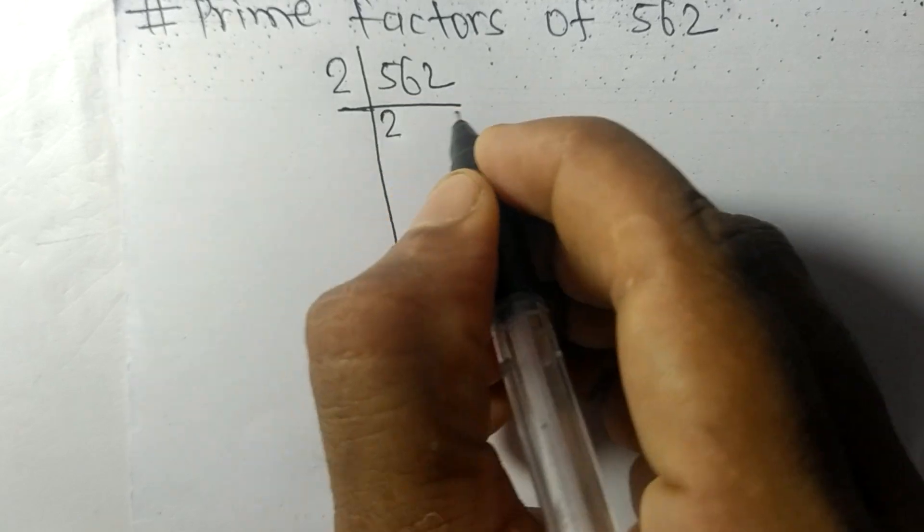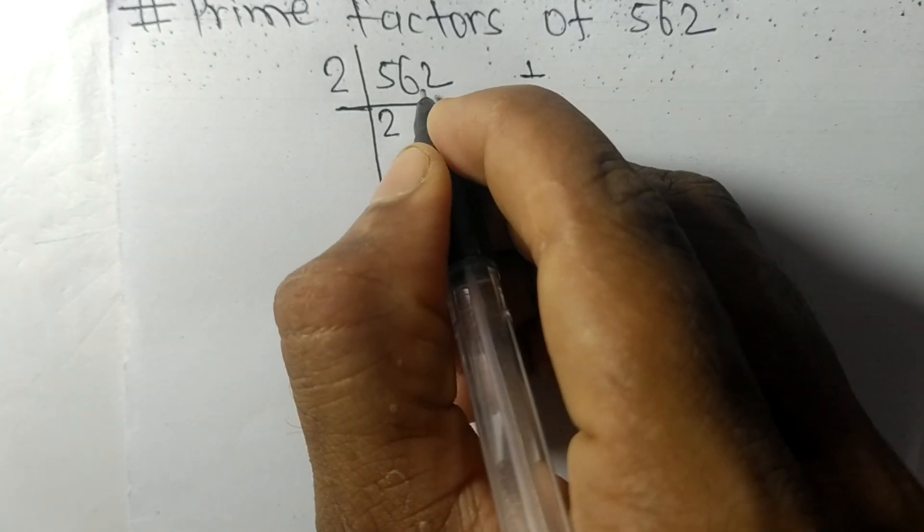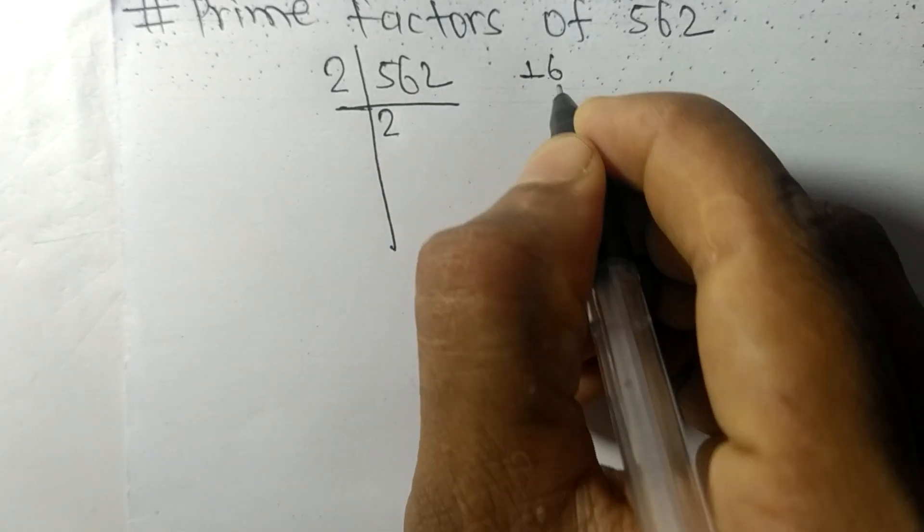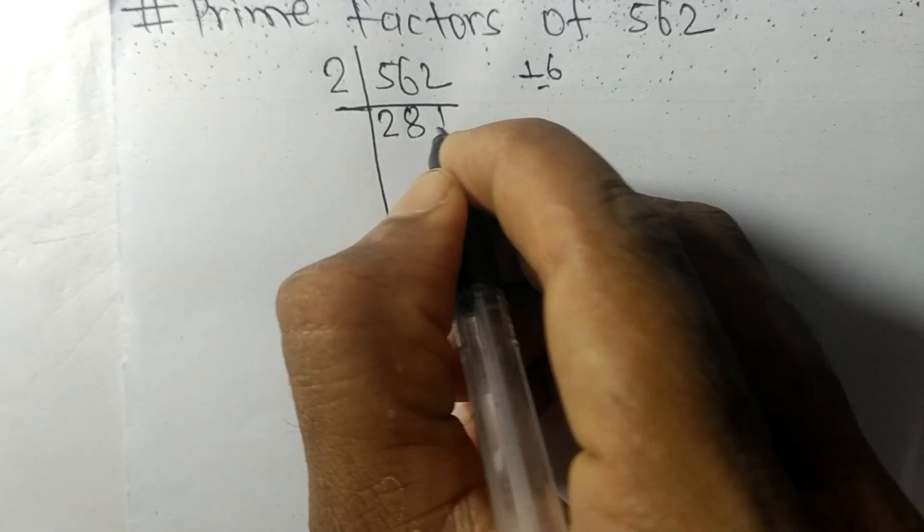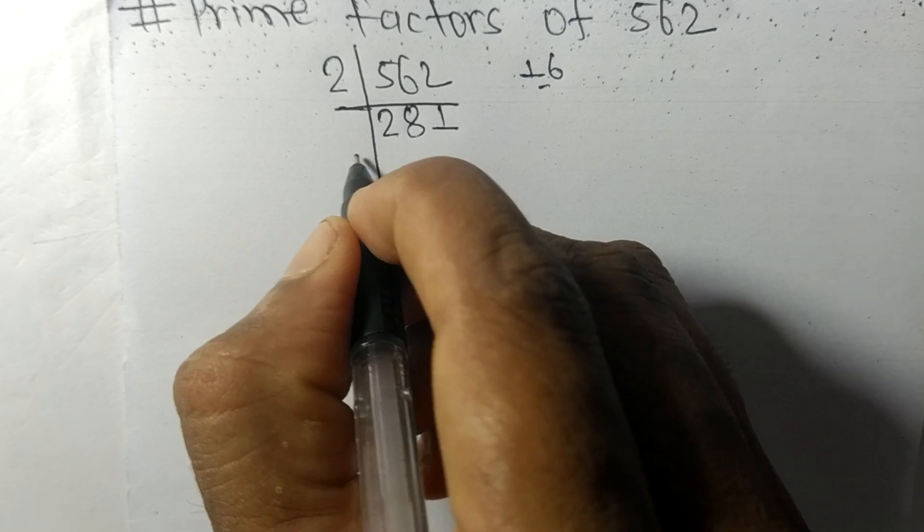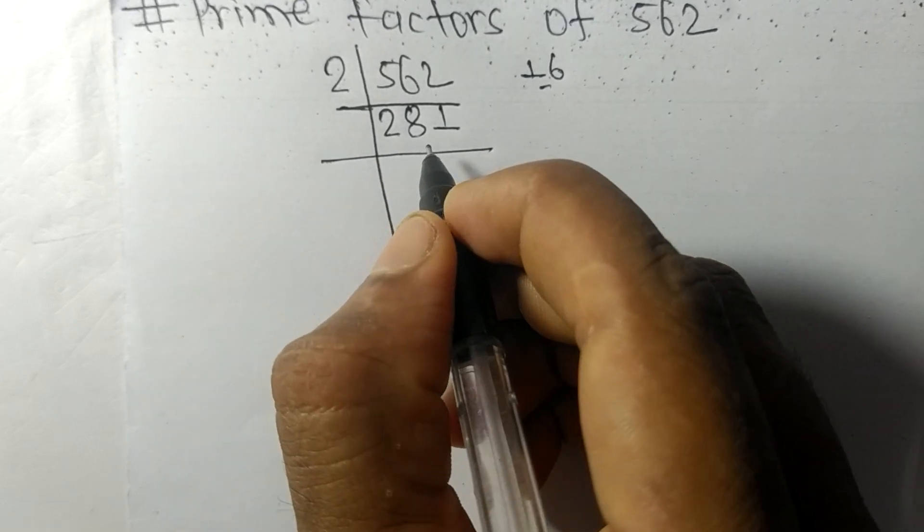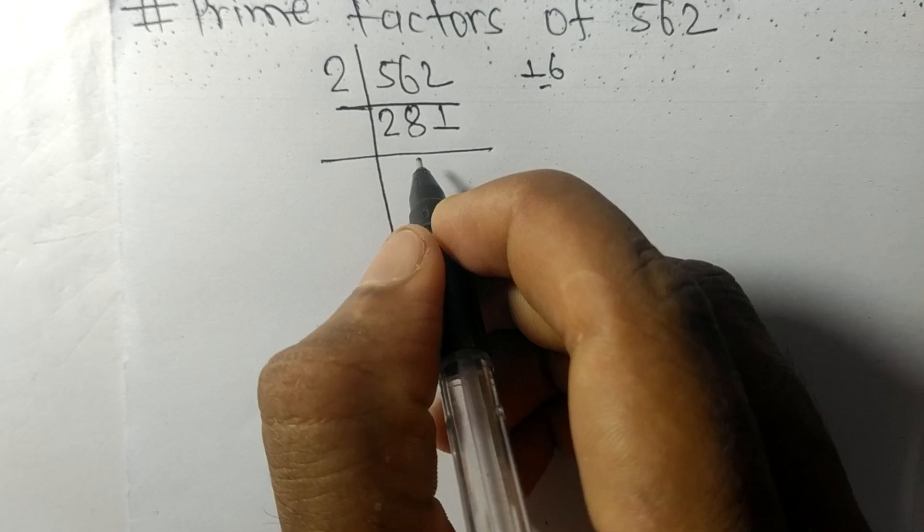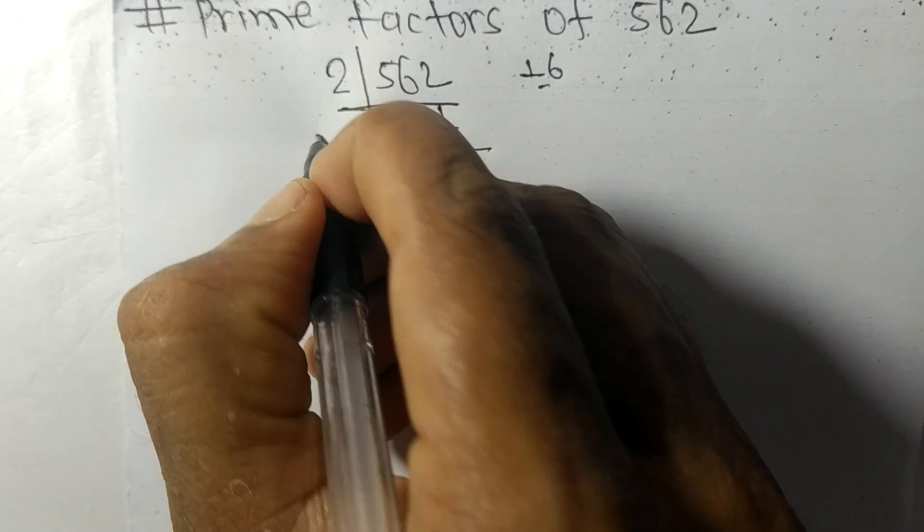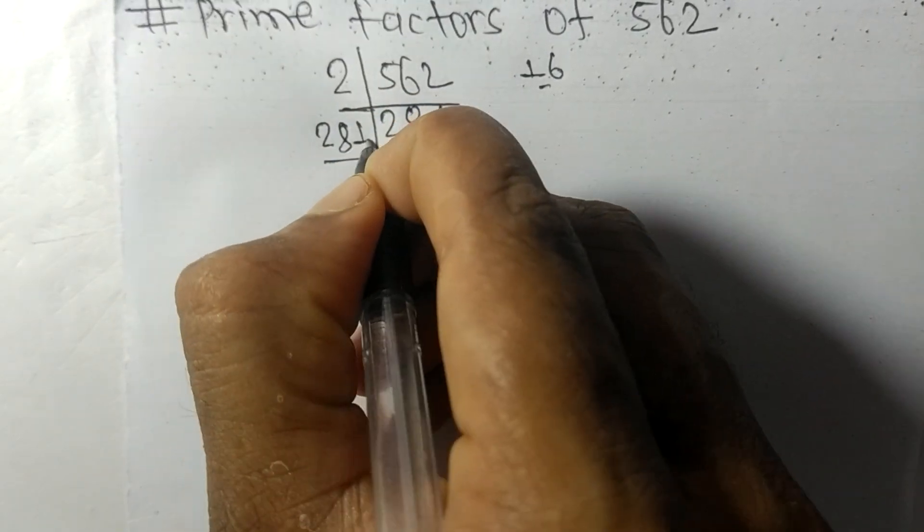2 times 2 means 4, remainder 1. 16, so 2 times 8 means 16, and 2 times 1 means 2. So now we got here 281, which is a prime number, so it is divisible by 281 itself.